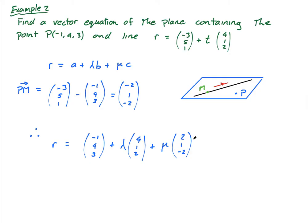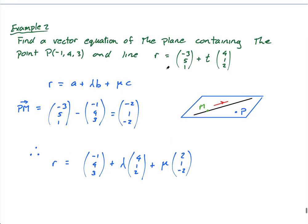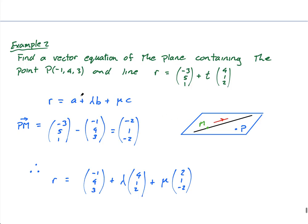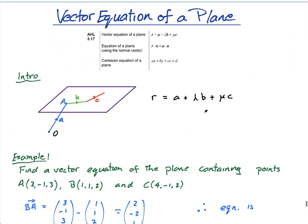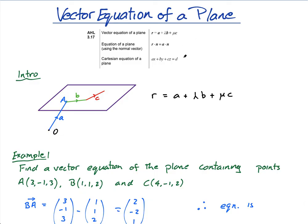To find the vector equation of a plane in this form I need a point on the plane and two vectors parallel to the plane but not parallel to each other. In the next lessons we'll look at other forms of the equation of a plane. This vector form is, in my opinion, the most concise and easiest to work with. If you type ax + by + cz = d into GeoGebra you'll get a plane — I'll explain what that means in that lesson.